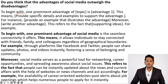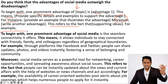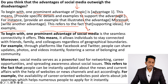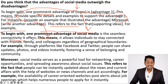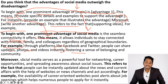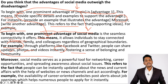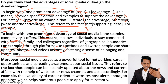For the second paragraph: 'To begin with, one prominent advantage of social media is the seamless connectivity it offers. This means it allows individuals to stay connected with friends, family, and colleagues regardless of geographical boundaries. For example, through platforms like Facebook and Twitter, people can share updates and photos instantly, fostering a sense of belonging and community.' One advantage is done. Those who write only one advantage with no coherence connectors will get no marks — the structure of 'this means' and 'for instance' is very important.